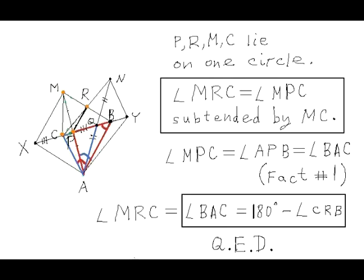This is the key fact in the solution of this problem. Since four points P, R, M, and C lie on one circle, we can conclude that angles MRC and MPC are congruent since they are subtended by the same chord or arc MC.